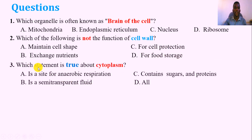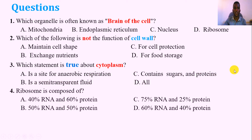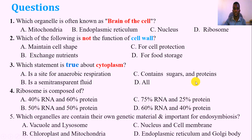Question number three: Which statement is true about cytoplasm? A. Is a site of anaerobic respiration. B. Is semi-transparent fluid. C. Contains sugar and protein. D. All. Question number four: Ribosome is mainly composed of — A. 40% RNA and 60% protein. B. 50% RNA and 50% protein. C. 75% RNA and 25% protein. D. 60% RNA and 40% protein. Question number five: Which organelles contain their own genetic material and are important for endosymbiosis? A. Vacuole and lysosome. B. Chloroplast and mitochondria. C. Nucleus and cell membrane. D. Endoplasmic reticulum and Golgi apparatus.